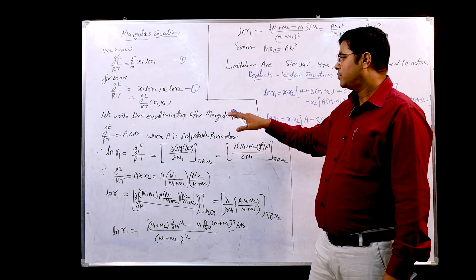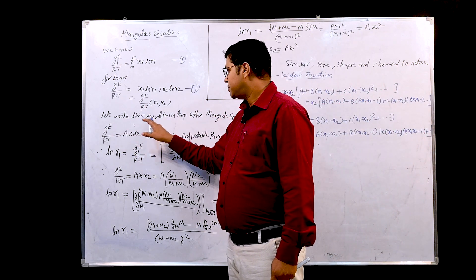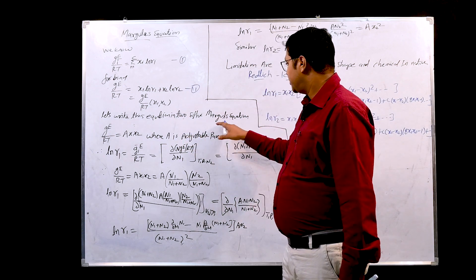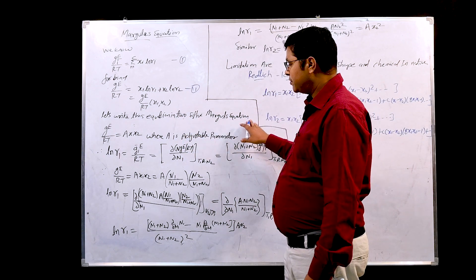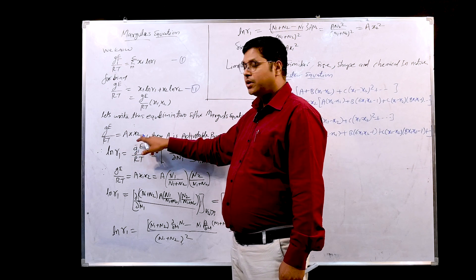Margules has a two-point constant A and we write this expression with suffix two suffix Margules equation. g_e/RT equals constant A into x1 x2. He has assumed this where A is an adjustable parameter.